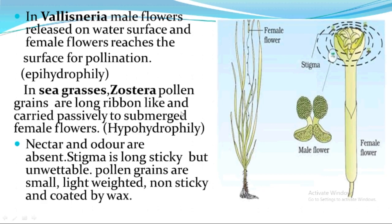Next is seagrass and Zostera. The pollen grains here are quite long and ribbon-like. The flowers are present in the water and the pollen easily reaches them for pollination. This is called hypo-hydrophily. In these flowers, nectar and odor are absent. The stigma is quite sticky and unwettable. Pollen grains are small, light-weighted, non-sticky, and coated with mucilage.